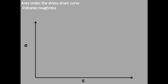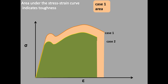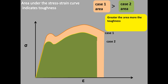Now observe the area under the stress-strain curve — it indicates toughness. This is case 1 area and this is case 2 area. Case 1 area is greater than case 2 area, which means case 1 model is tougher than case 2 model, as greater the area, more the toughness.